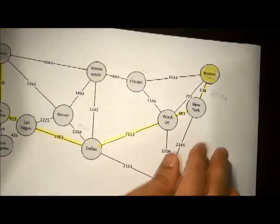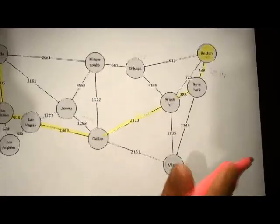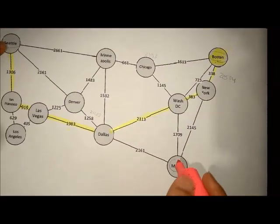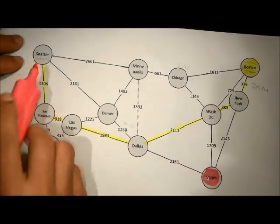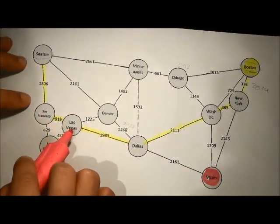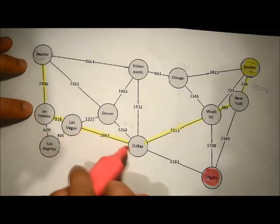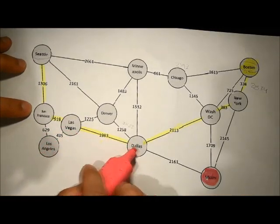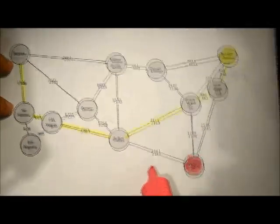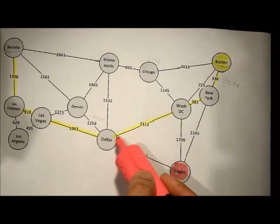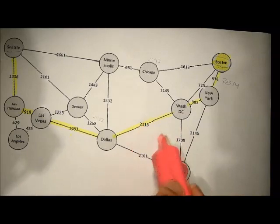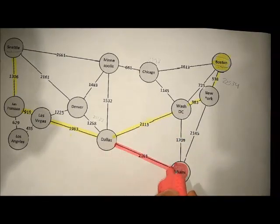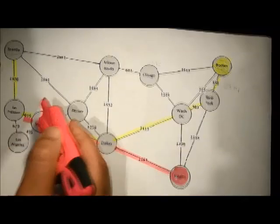Now let's consider the other option if Ali wants to travel to Miami. The same path applies from Seattle to San Francisco to Los Angeles and then to Dallas. From Dallas, going to Washington DC and then to Miami would total more than 3000 miles, so the more direct path is the right one for him.